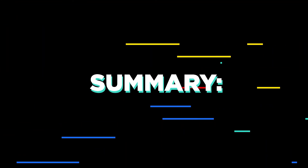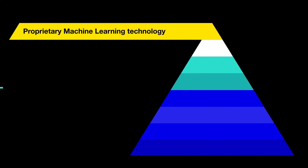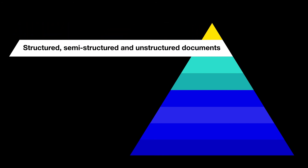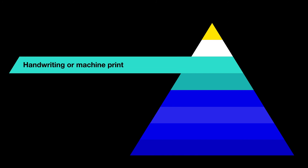As you can see, Hyperscience's proprietary machine learning technology is capable of processing all sorts of documents, including structured documents, semi-structured documents, and even unstructured documents. This includes whether these documents are completed in handwriting or with machine print.